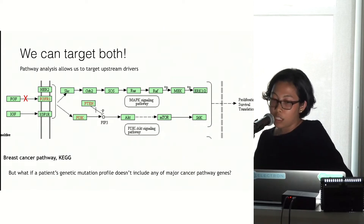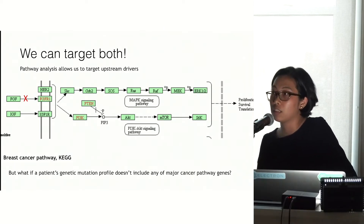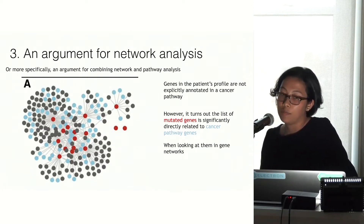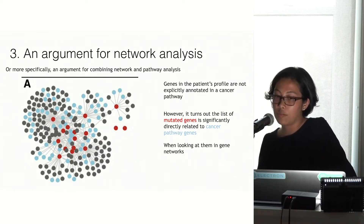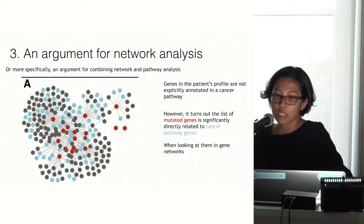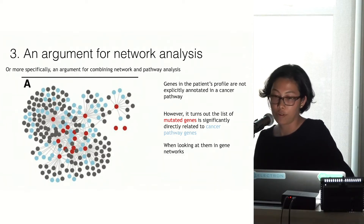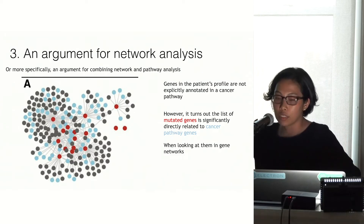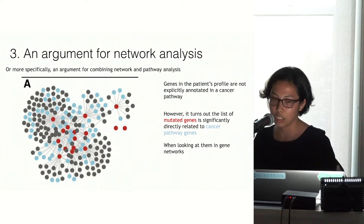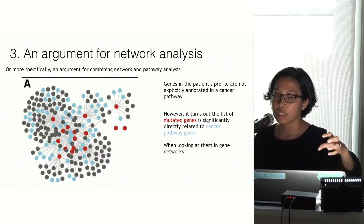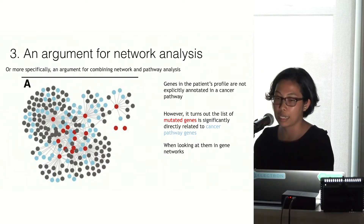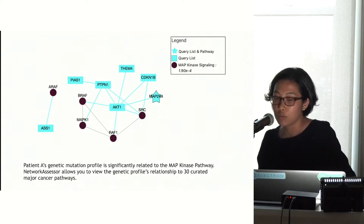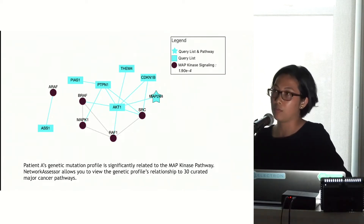Now we have the question: what if a patient's genetic mutation profile doesn't include any of the major cancer pathway genes? Are you stuck? That leads to the argument for network analysis, or more specifically, an argument for combining network and pathway analysis. If you have patient A whose genes aren't in any cancer pathway, when you look at the entire network of genetic interactions, the list of mutated genes — marked in red — can actually be peripherally but directly related to cancer pathway genes when viewed in gene networks. And that's what this tool, Network Assessor, does.